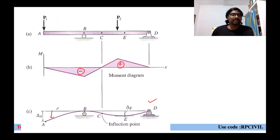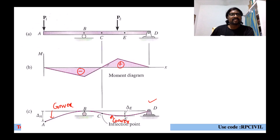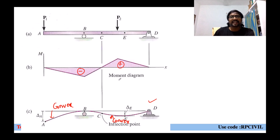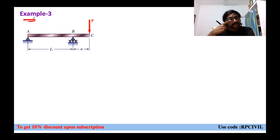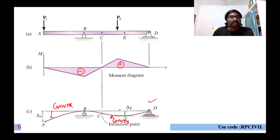The finalized diagram shows: positive bending moment diagram region has convexity downward, negative bending moment diagram region has convexity upward. This is your convex portion and this is your point of contraflexure. We need to check the consistency between the bending moment diagram and the deflection profile (elastic curve).